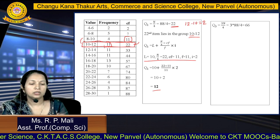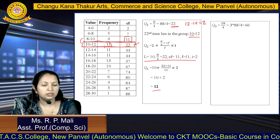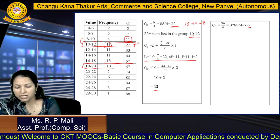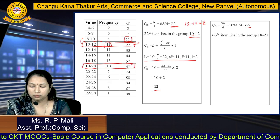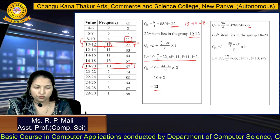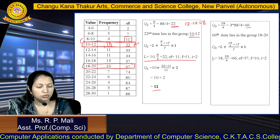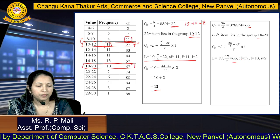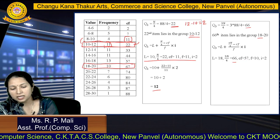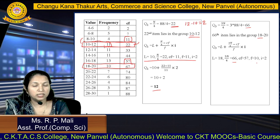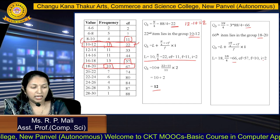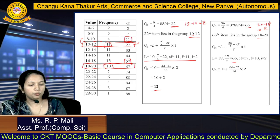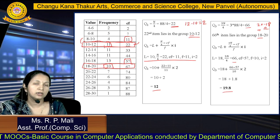Now we are going to find the value for Q3. How to find the Q3 item? 3N by 4. 3N by 4 means 3 into 88 by 4, which is 66. Where does 66 lie? In the class 18 to 20. So the values for Q3 formula are: L equals 18 (lower class limit), 3N by 4 equals 66, Cf (cumulative frequency of preceding class) equals 57, F (frequency of that class) equals 10, and I equals 2 (since 20 minus 18 is 2). Putting all values into the formula, you will get Q3 as 19.8.